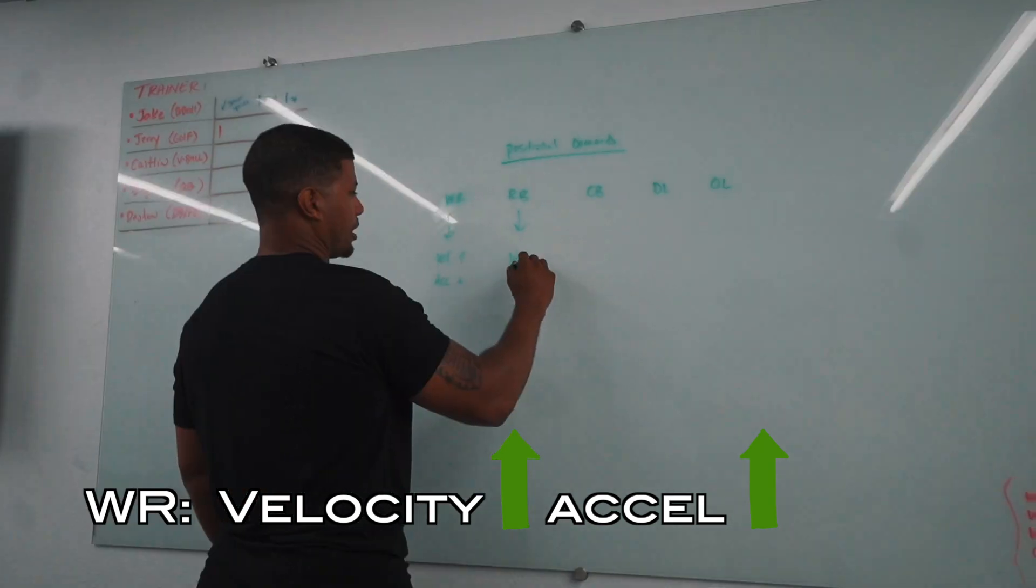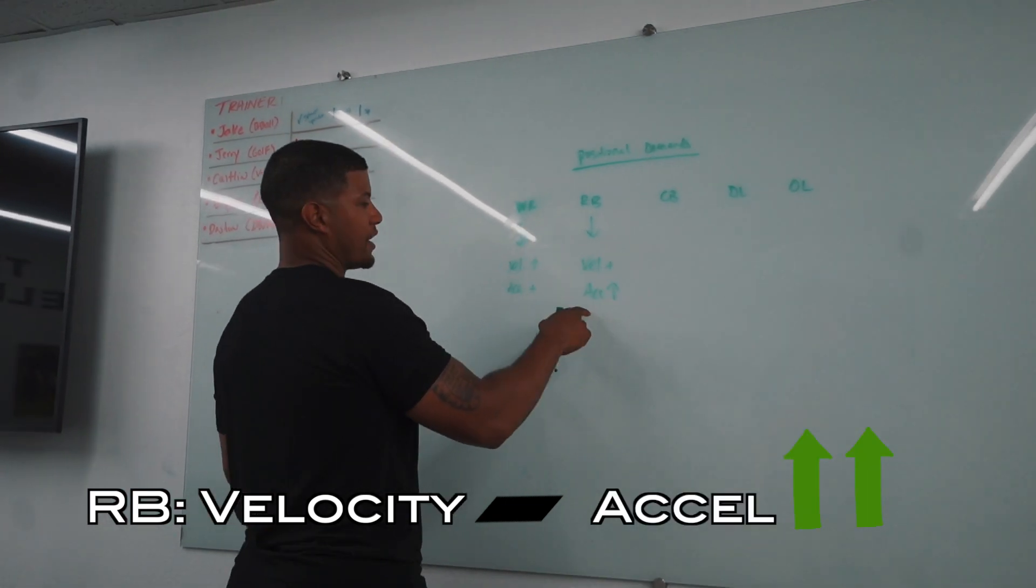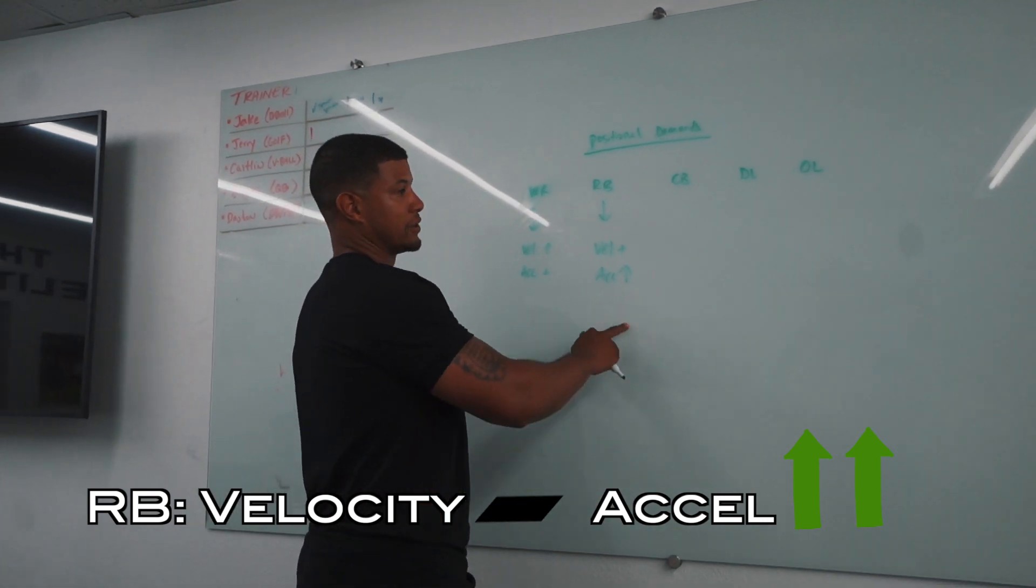Now, if you look at a running back, they have to have pretty even velocity, but very good excel. They have to be able to get to top speed in a few steps.